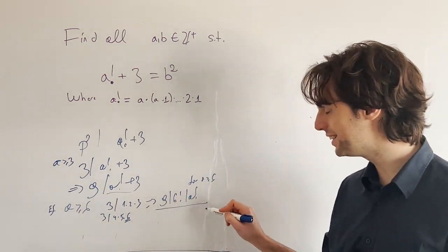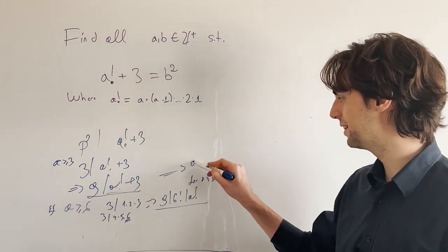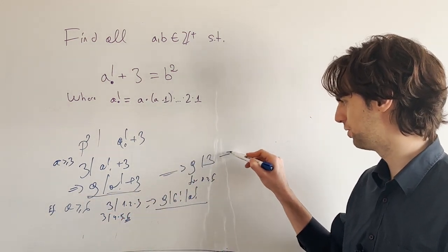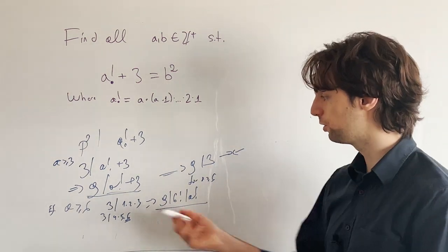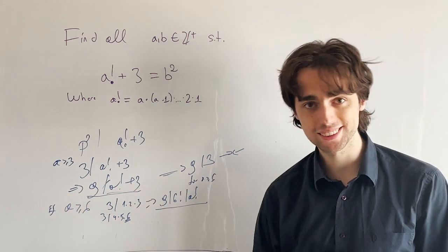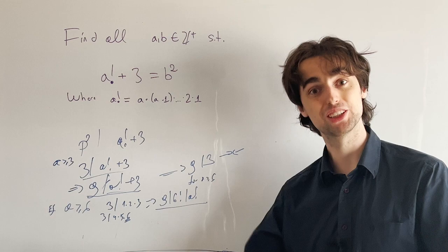And now if 9 divides this, and 9 divides this, that would imply that 9 divides 3, which is absurd. This is not true. So we are left with only one option, which is that 9 doesn't divide this, but 3 does. And so it cannot be a square. So that is how we get rid of the cases a is greater than or equal to 6.